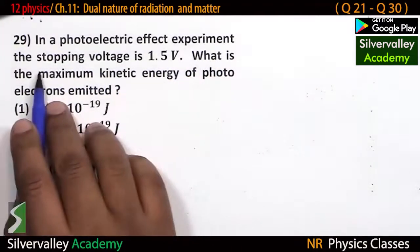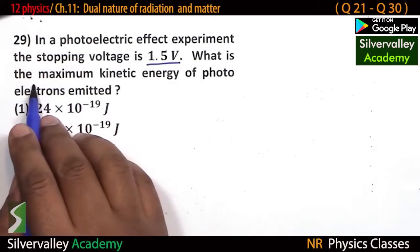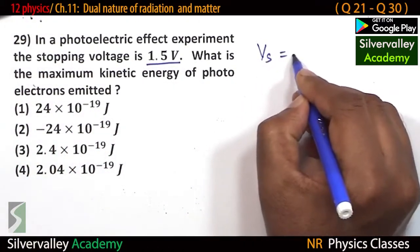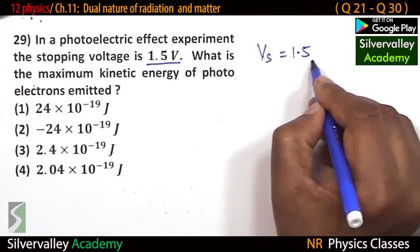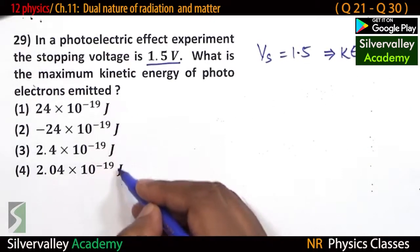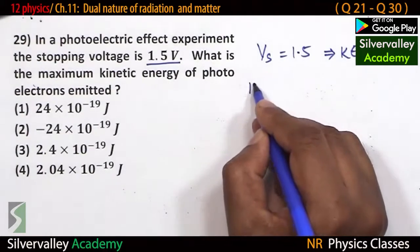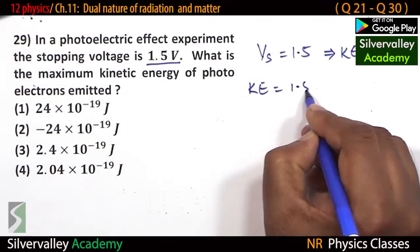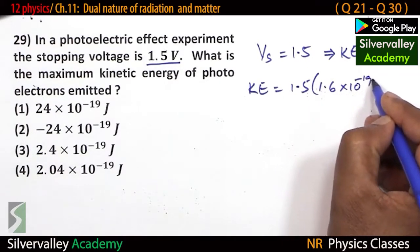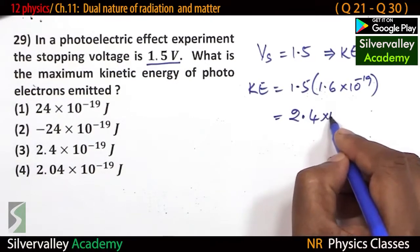In a photoelectric effect experiment, stopping potential is 1.5 V. What is the maximum kinetic energy of photoelectrons? Stopping potential 1.5 V implies kinetic energy is 1.5 eV. In joules, that is 1.5 times the charge of an electron: 1.5 times 1.6 equals 2.4, giving 2.4 times 10 to the power of minus 19 joules.